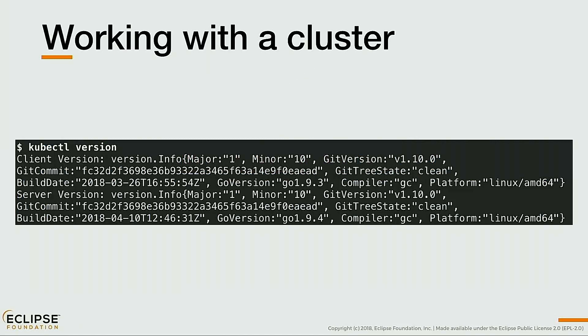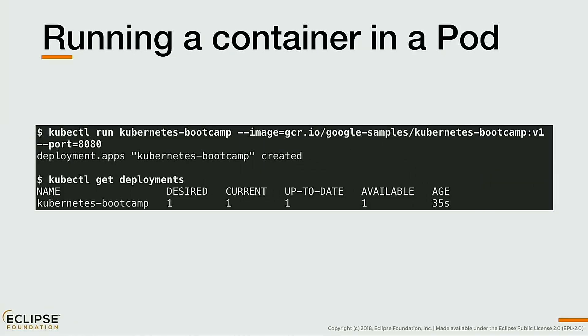The first thing you want to run when starting with a cluster is to check versions. If I run `kubectl version`, I get the version of the client — the command-line interface I use locally — and the server also returns the version of Kubernetes running on the cluster. Then, to run a container, I use `kubectl run`, give it a name, and reference an image. Here I use gcr.io — Google Container Registry — and ask to deploy the Kubernetes Bootcamp image. A couple of seconds later, I can ask for the list of deployments and Kubernetes tells me the application has been deployed.